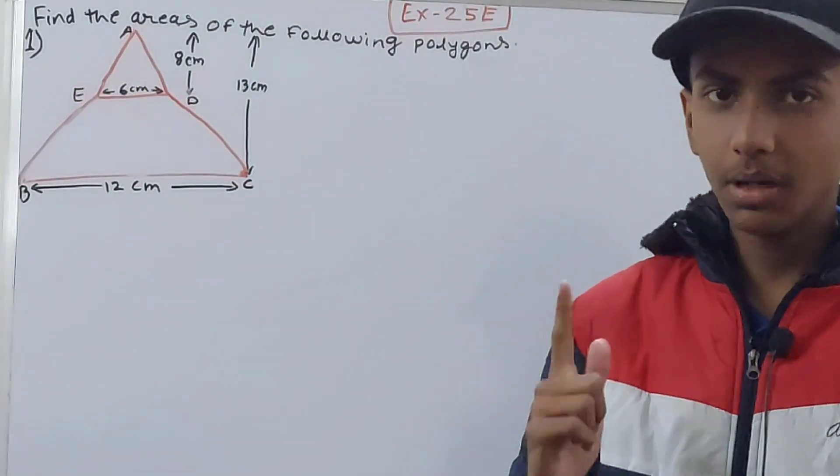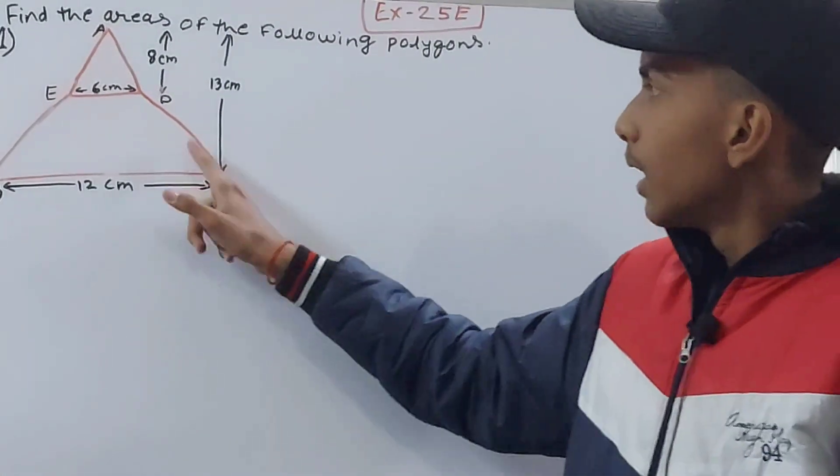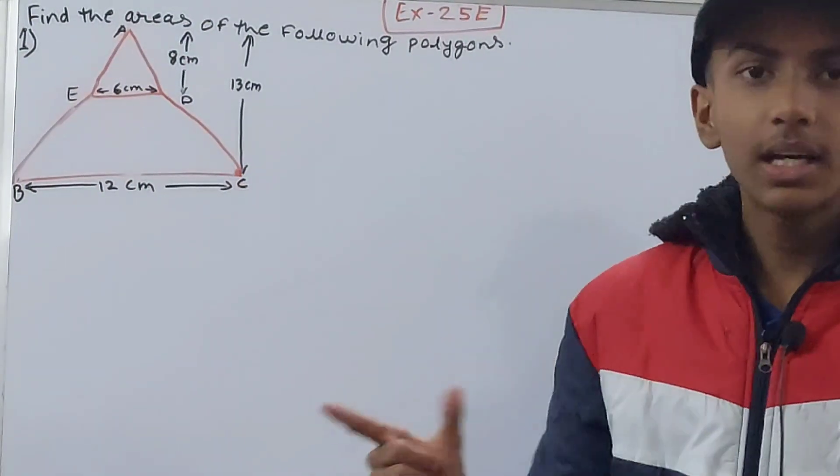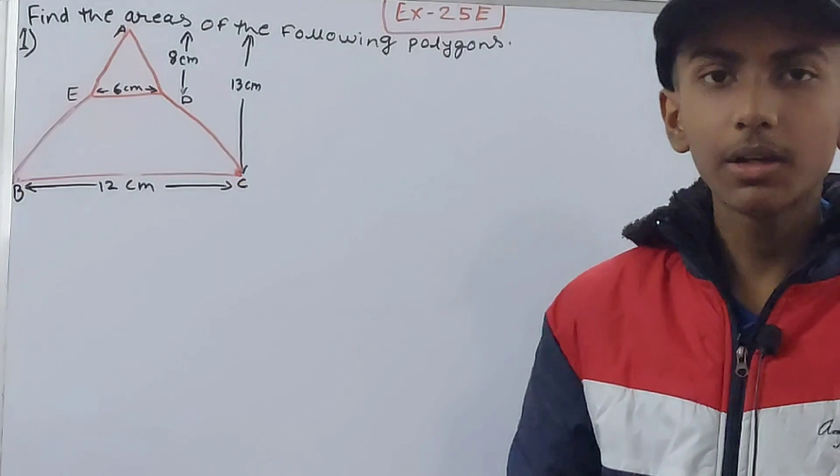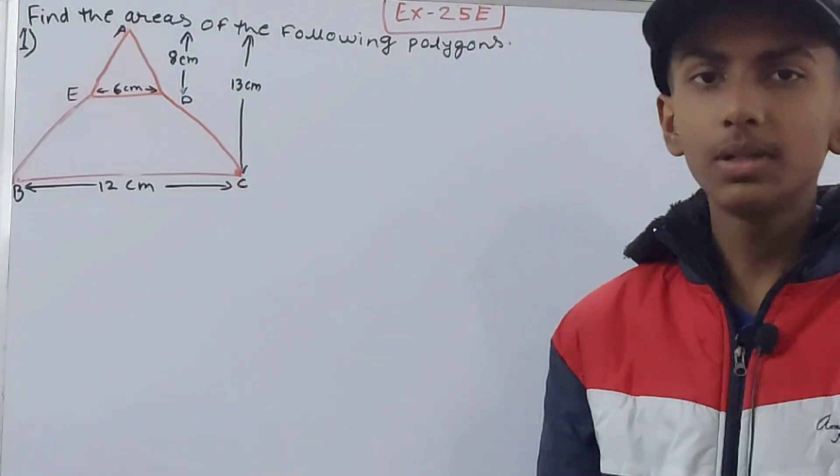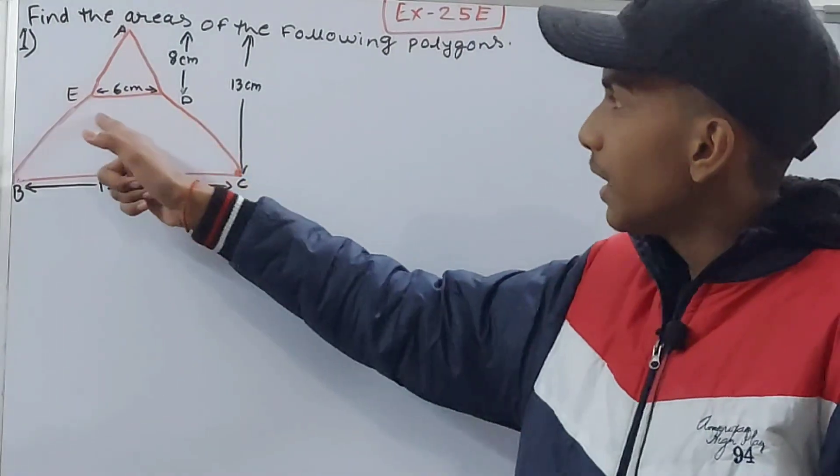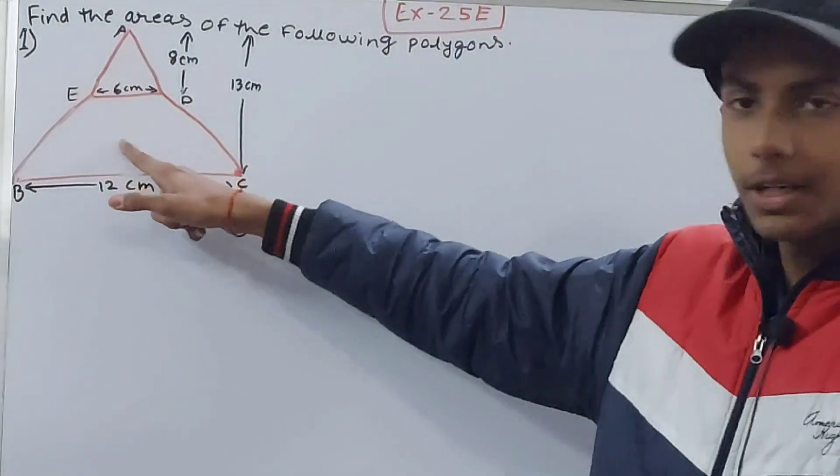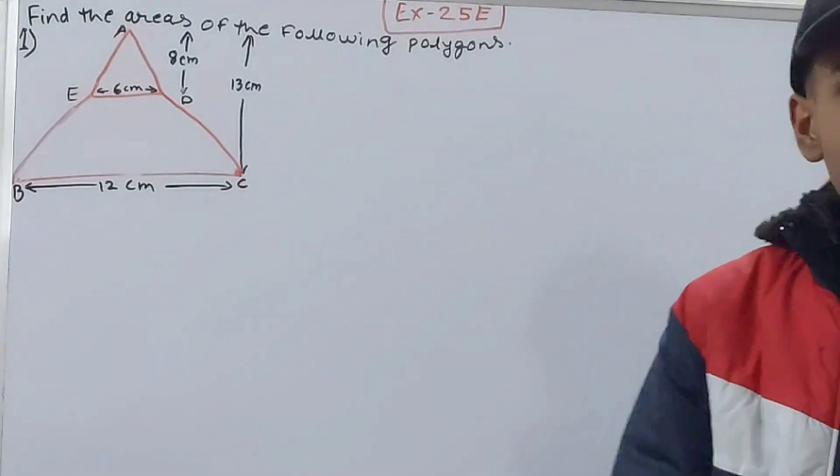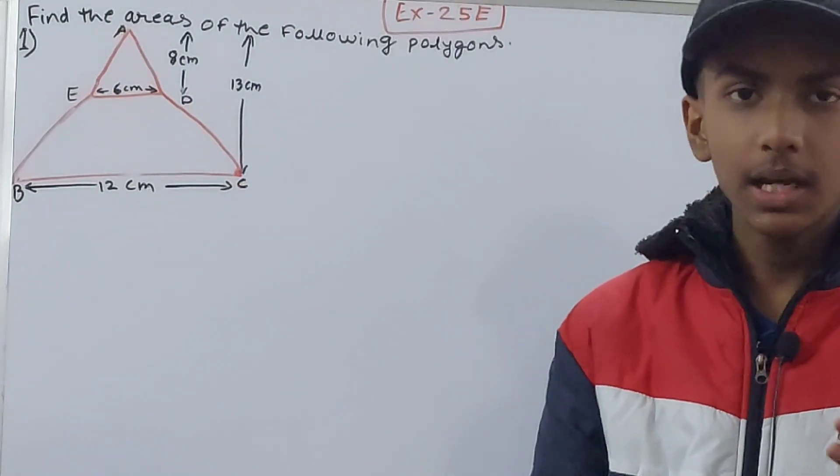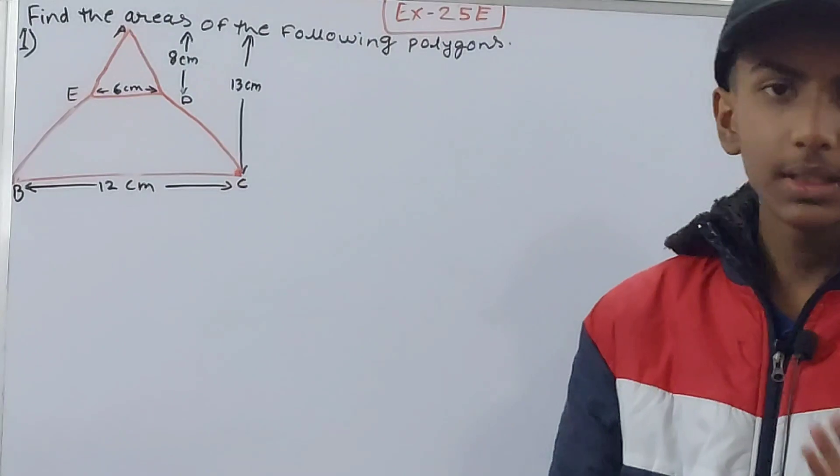You can see here this is divided into a triangle and a trapezium. We will calculate the area of the two separately. We know the formula for triangle and that of the trapezium, so we can calculate the area and then we will add them to get the area of this entire figure.